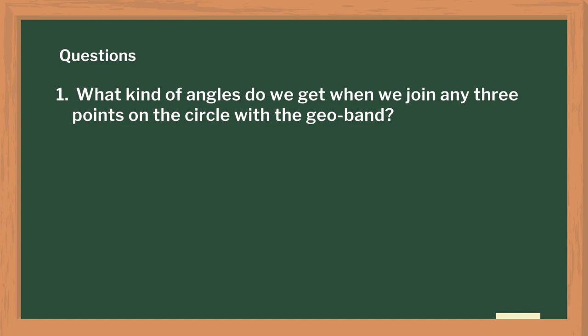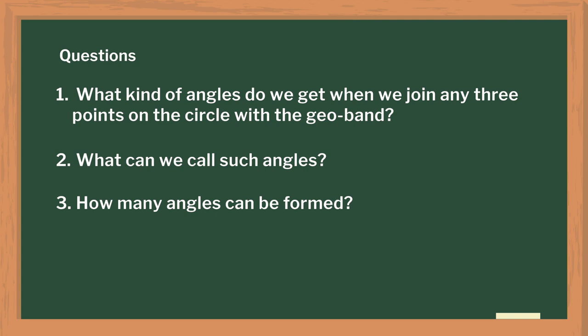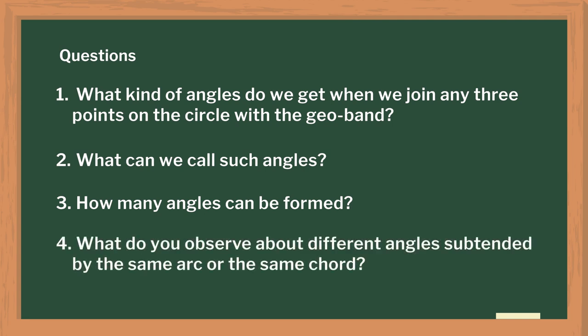Here, we can ask them certain questions: What kind of angles do we get when we join any three points on the circle with the geo band? What can we call such angles? How many angles can be formed, and what do you observe about different angles subtended by the same arc or same chord? During the discussion, explain the term 'subtended by'.